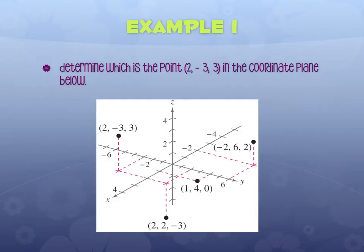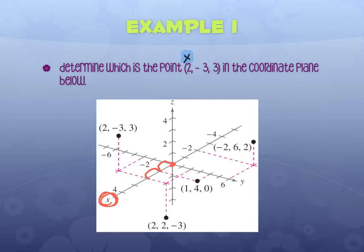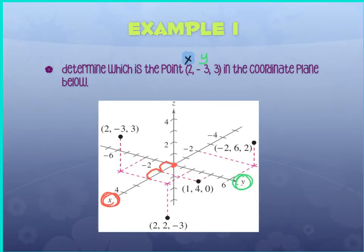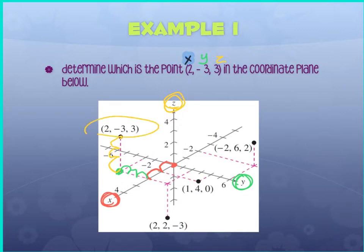Let's determine where the point (2, −3, 3) is in the coordinate plane. The x is positive 2, so start from the middle and move forward two places on the x-axis. The y is negative 3, so on the y-axis move to the left three places. The z is positive 3, so move up one, two, three. There's that coordinate point.